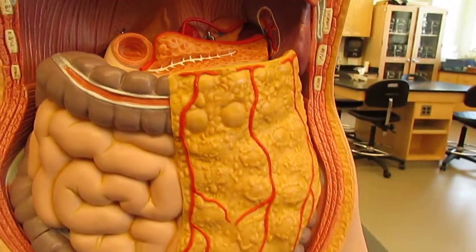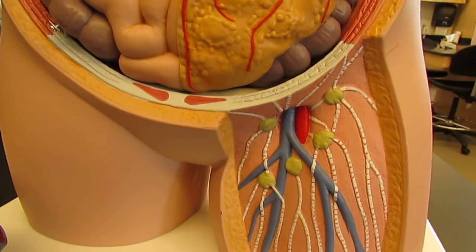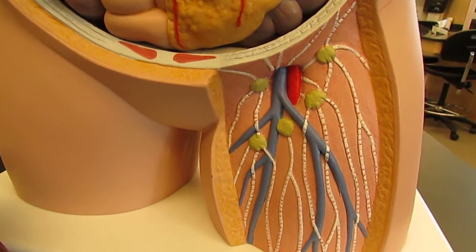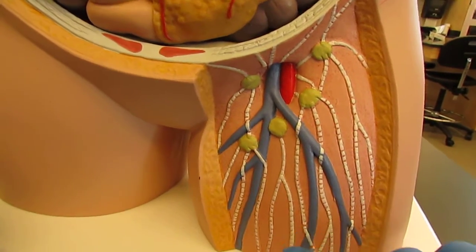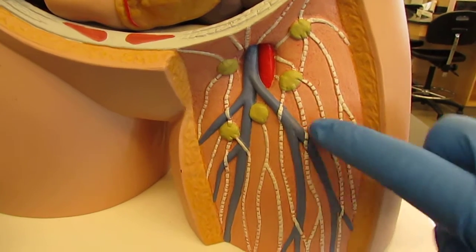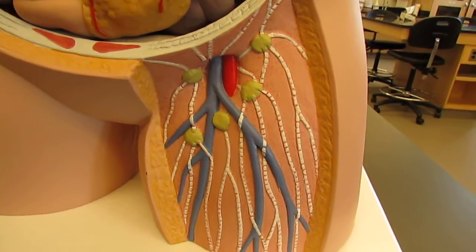And the last structures that I want to point out today are way down here. This is a representative sample of these structures and vessels, which are all throughout your body. These white vessels look kind of spotty. That is representing the fact that they have one-way valves in them because these are very low pressure conduits.